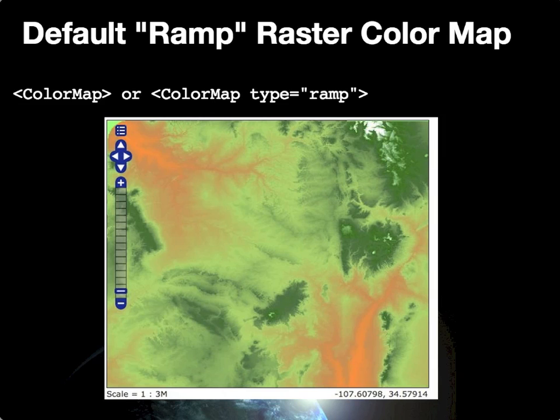The default raster color map type, if you do not specify a type, is the ramp type. With a color ramp, you define points along a continuous color definition between which color values are interpolated. If you do not specify type equals ramp or another value, GeoServer will assume ramp. This illustration shows what a ramp type color map looks like for the digital elevation model — the gradients are fairly continuous and all pixels appear to have colors associated with them.